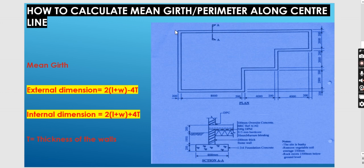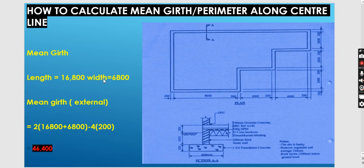And for the width, it is also from this point here up to this point — that is external. When we are talking of internal, we are inside the house. It's from this point up to this point inside. For the width, it is also from this point up to that point, and then we add 4T. T is the thickness of the wall. For our case, our wall is 200 millimeters thick stone wall.